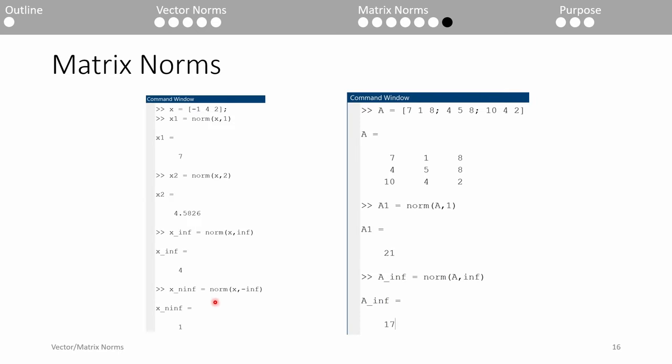Here are two screenshots illustrating the usage of the norm function applied to the examples we did earlier. The left screenshot uses the same vector we had in slide 8. The last norm demonstrates what happens when you set P equals to negative infinity. It returns 1, which is the smallest absolute value element in the x vector. The right screenshot repeats the matrix norm examples from slides 12 and 13 in MATLAB.